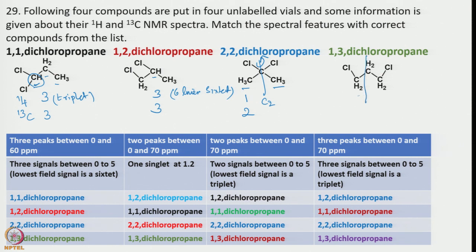Now let us look into 1,3-dichloropropane. Again we have a C2 axis of rotation, and there are two types of signals: the methylene carbons with chlorines on both sides, and the central methylene. The NMR signal for the central methylene would show a quintet, and the outer methylenes would show a triplet. So 2 signals will be there in 13C NMR.